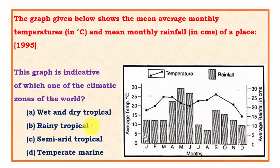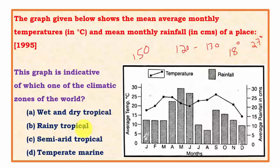For rainy tropical, annual rainfall is around 150 cm, and the graph shows 120 to 130 cm which is close. The temperature shows annual average around 15 to 25 degrees Celsius, but in the rainforest region the average monthly temperature is always above 18 degrees Celsius and around 27 degrees. Semi-arid tropical has average annual rainfall less than 65 cm, but the graph shows rainfall higher than 100 cm, so this is clearly wrong. Both wet and dry tropical and semi-arid tropical options are clearly wrong.